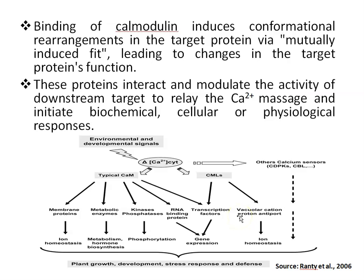This diagram shows calcium signaling with calmodulin and other calcium sensors like CMLs, in response to environmental and developmental stimuli. A transient elevation in calcium concentration is observed in the cytosol by calcium sensors, including calmodulin, CMLs (calmodulin-like proteins), CDPKs (calcium-dependent protein kinases), and CBLs (calcineurin B-like proteins). CDPKs and CBLs are all abundant in plants.